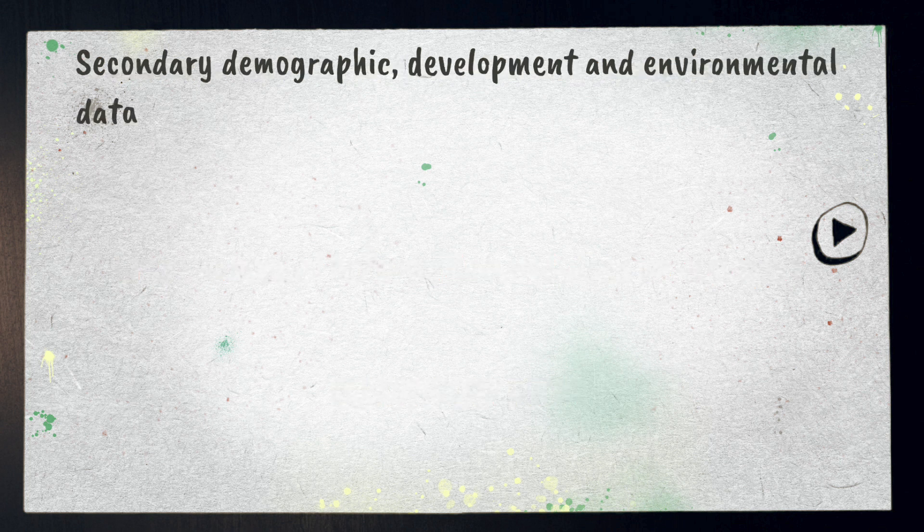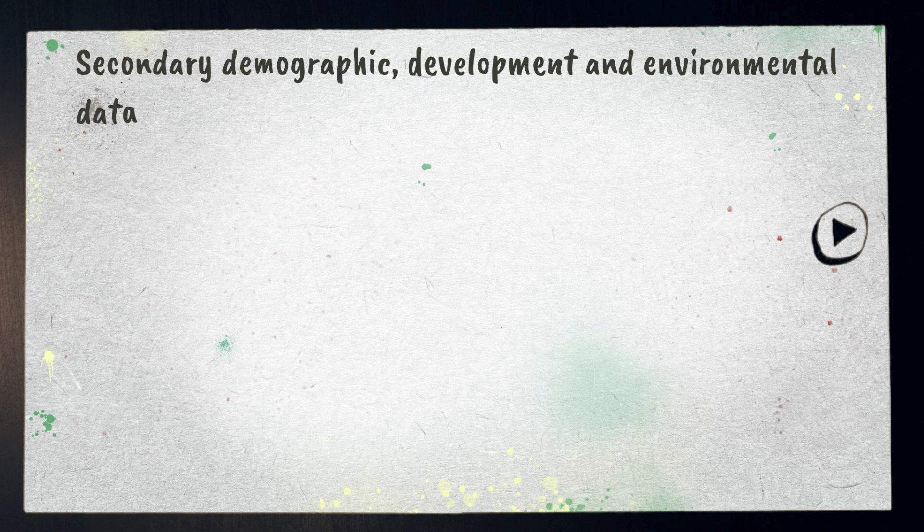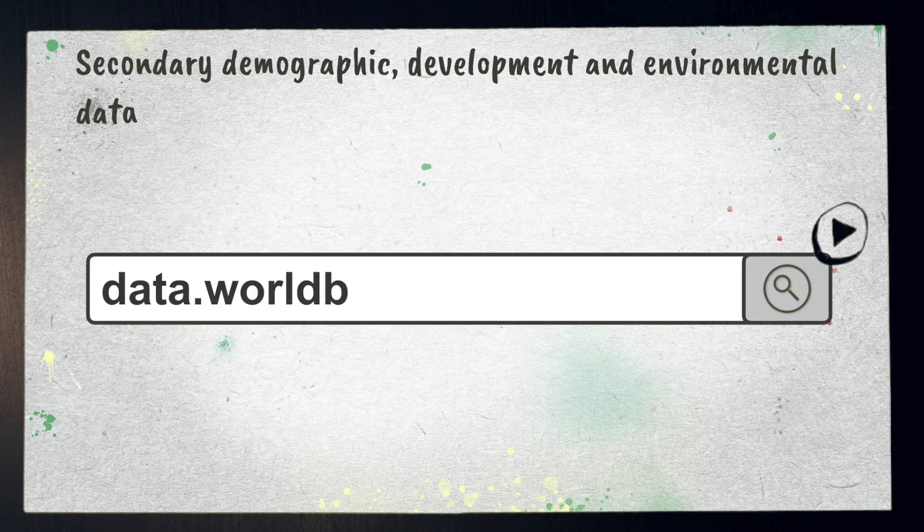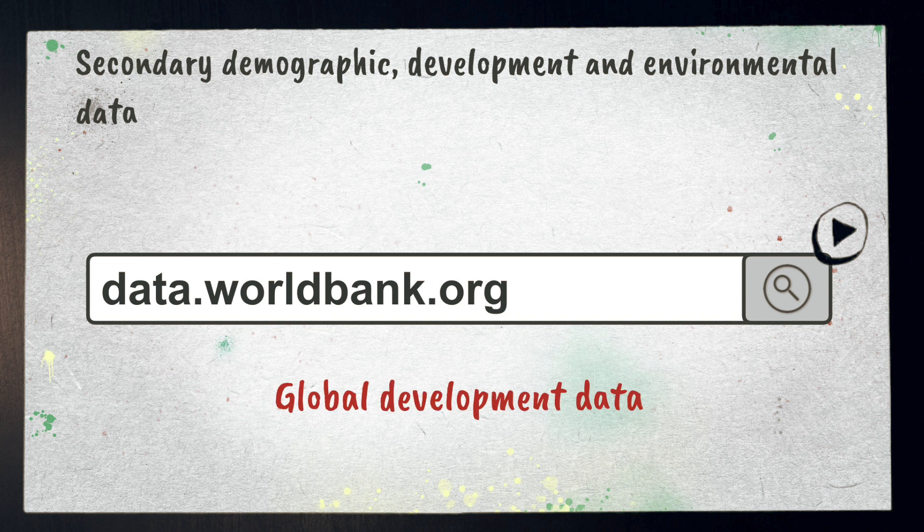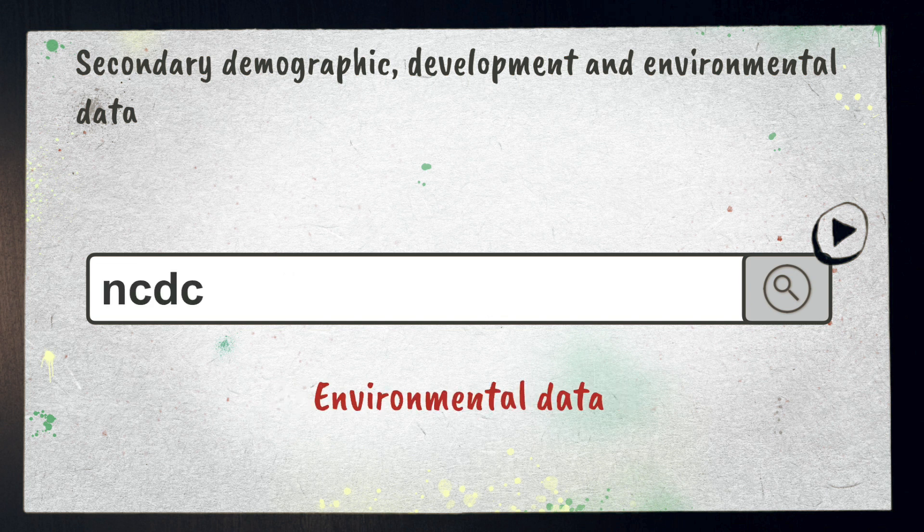That leads us to secondary demographic development and environmental data. This is an incredibly broad suggestion and it's sometimes hard to know where to start. To get the ball rolling check out data.worldbank.org. This is a huge source of global development data. For environmental data try ncdc.noaa.gov.